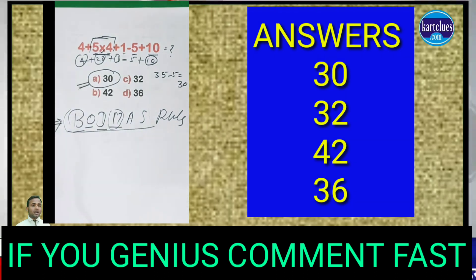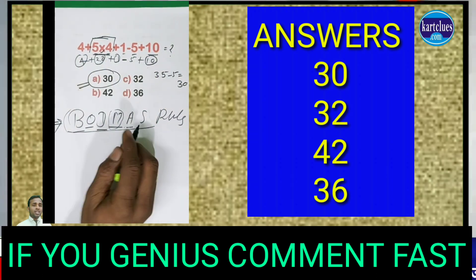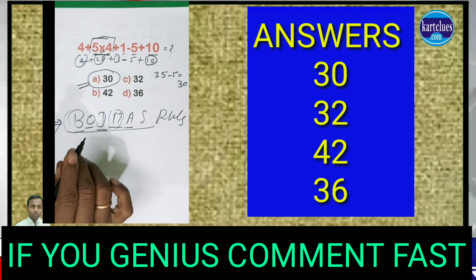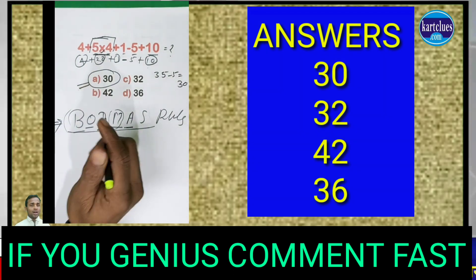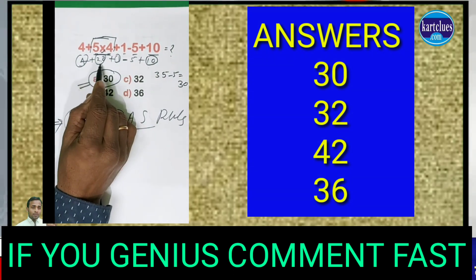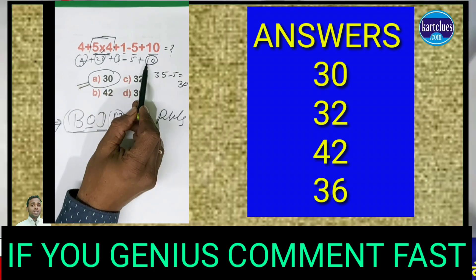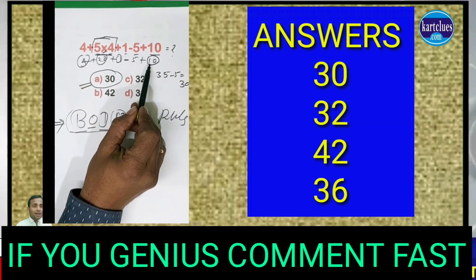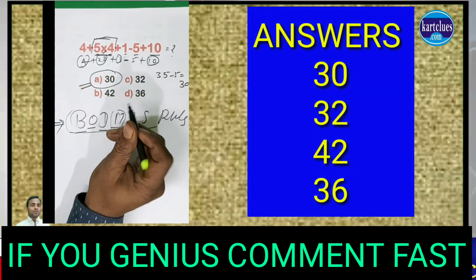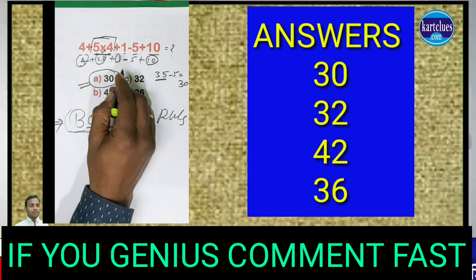And after that you will find addition wherever addition symbol is available. You have to collect that one. Means here 4 is plus, 20 is plus, 1 is plus, and 10 is plus. Total it will come 35.